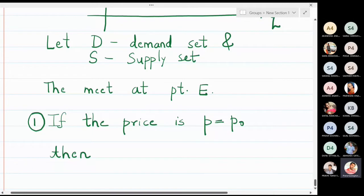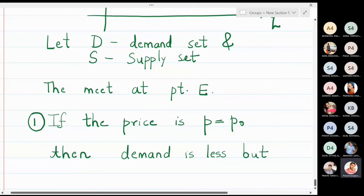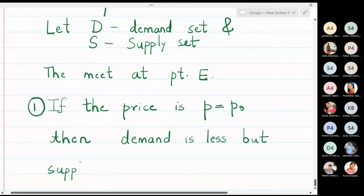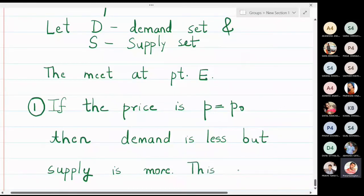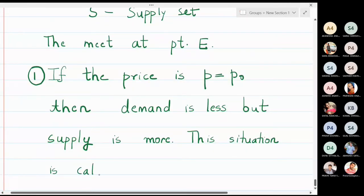If the price equals P0, then demand is less but supply is more. What will happen if an article has very less demand but there is a huge supply in the market? There will be surplus. This situation is called surplus — it is becoming extra in the market.